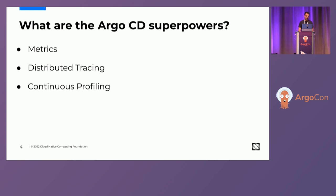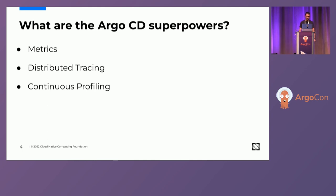I'm going to be talking about metrics — specifically Prometheus metrics — and also about distributed tracing, how Argo CD leverages distributed tracing to give you a much better overview of what's going on in your Argo CD instance. Deng is going to talk in his recording about how they run continuous profiling to find Argo CD bottlenecks at large scale.